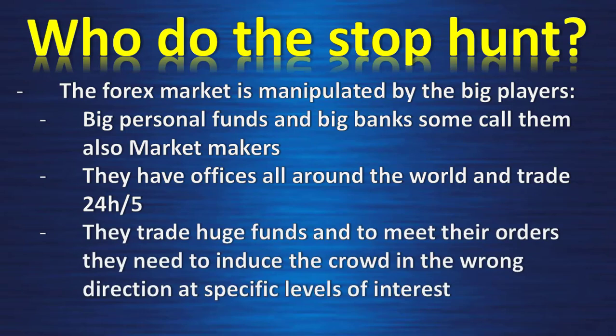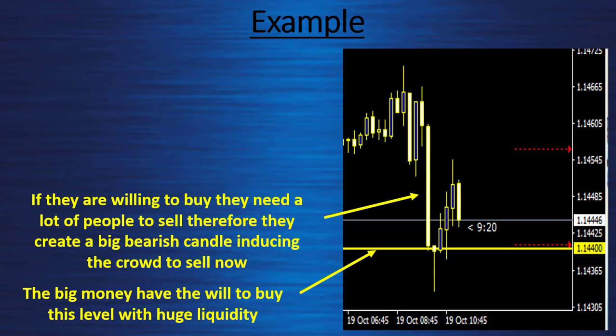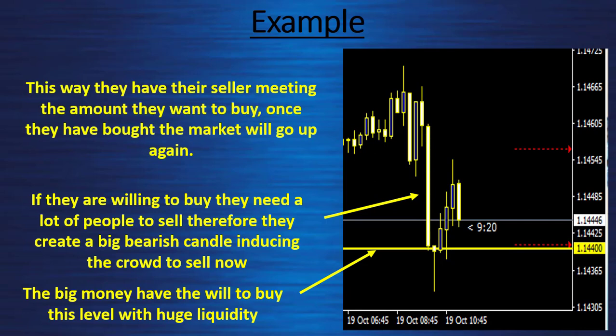They trade huge funds and to meet their orders they need to induce the crowd in the wrong direction at a specific level of interest. For example, at my yellow line, the big money have the will to buy and they have huge liquidity to put there. If they are willing to buy, they need a lot of people to sell. Therefore they create a big bearish candle inducing the crowd to sell. This way they have the sellers meeting the amount they want to buy. Once they have bought, the market will go up again.